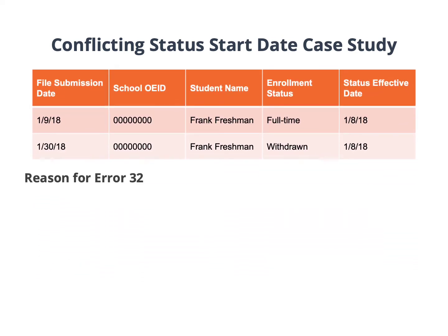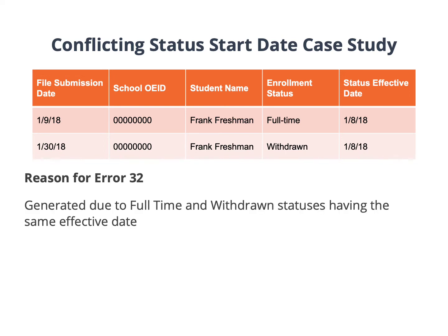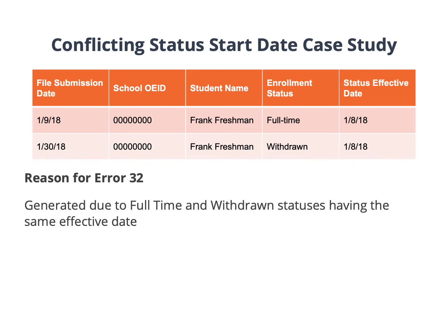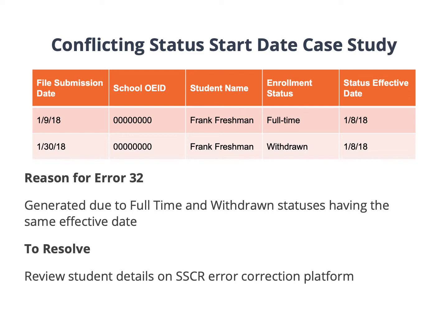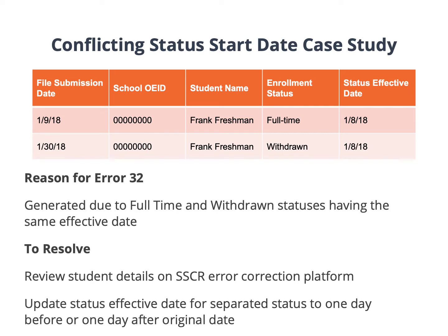So why was Error Code 32 returned? NSLDS will not accept a record with a separation status that has the same status effective date as a previously reported enrolled status. In this case, because the full-time and withdrawn statuses had the same effective date, NSLDS would not accept the withdrawn status and rejected the record with an Error 32. To resolve the error, review the student's record through the SSCR Error Correction platform and update the status effective date to one day before or one day after the original effective date.